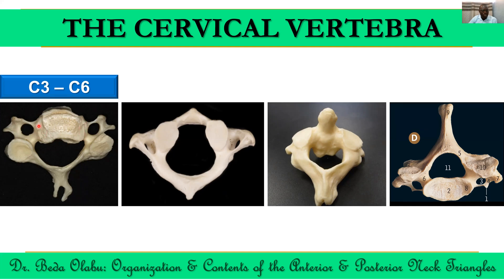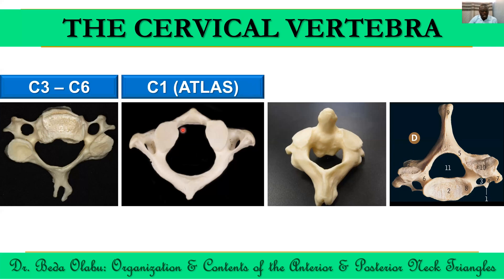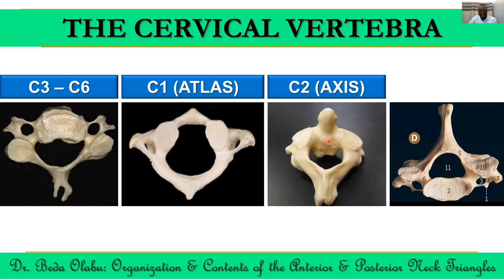The first vertebra, the atlas, is unique because of the presence of the anterior and posterior arches, absence of the body, wide neural canal, and the presence of anterior and posterior tubercles. These are called the lateral masses, which articulate with the occipital bone. The axis, C2, is unique because of the presence of the odontoid process — an upward projection from the body of the axis — also called the dens or the odontoid peg.